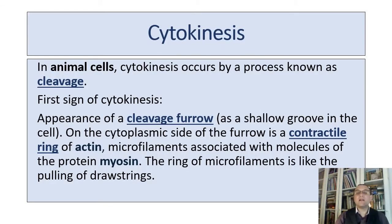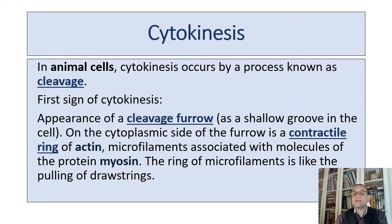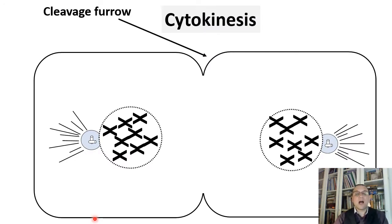In animal cells, cytokinesis occurs by a process known as cleavage. The first sign of cytokinesis is the appearance of a cleavage furrow — a hollow groove in the cell. On the cytoplasmic side of the furrow is a contractile ring of actin microfilaments associated with molecules of the protein myosin. This ring of microfilaments acts like a pulling of drawstrings and splits the cell in half.